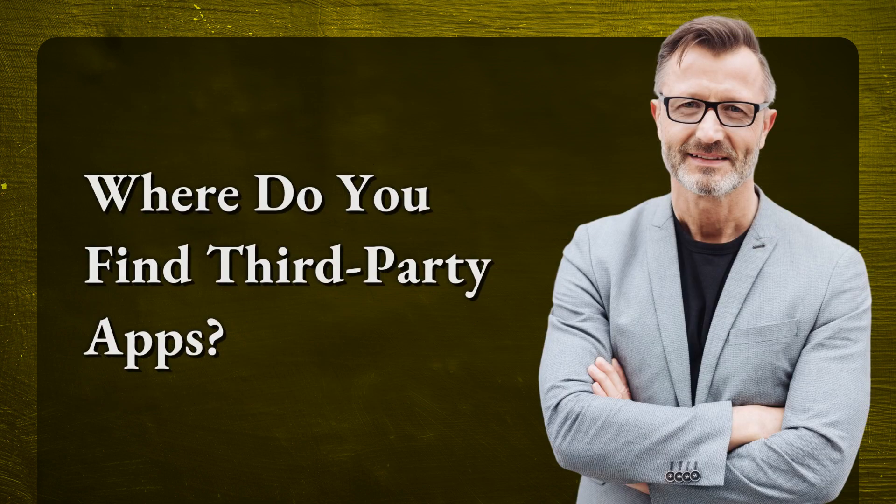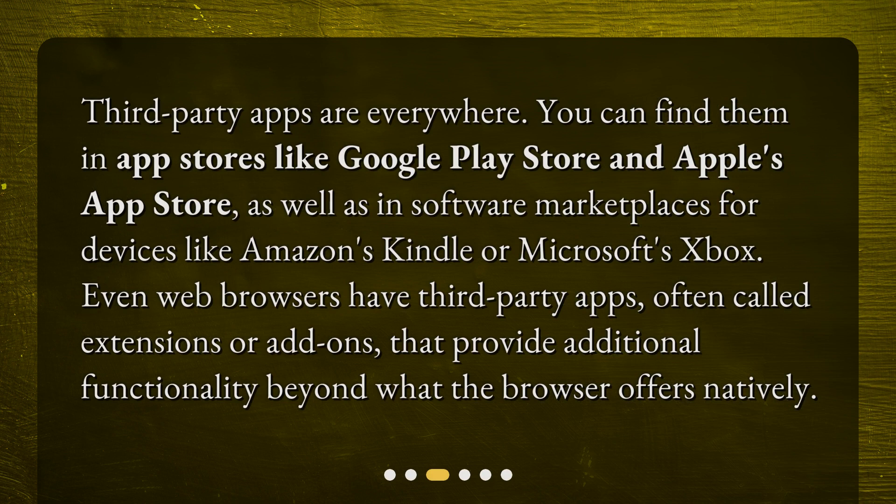Where do you find third-party apps? Third-party apps are everywhere. You can find them in app stores like Google Play Store and Apple's App Store, as well as in software marketplaces for devices like Amazon's Kindle or Microsoft's Xbox. Even web browsers have third-party apps, often called extensions or add-ons, that provide additional functionality beyond what the browser offers natively.